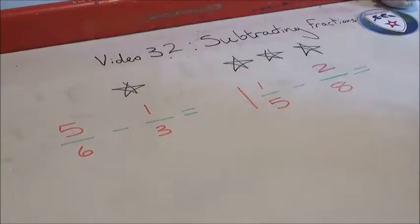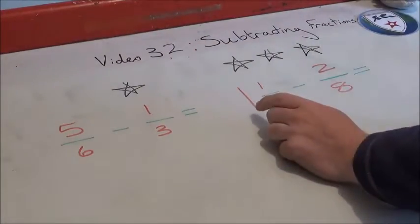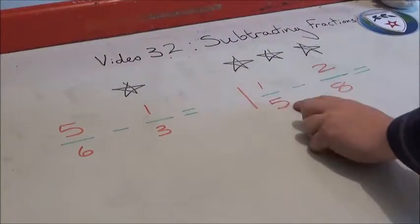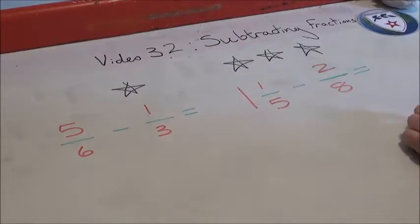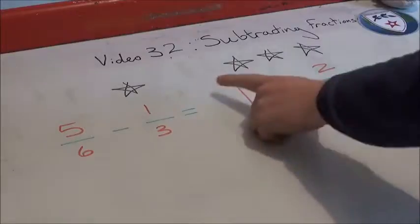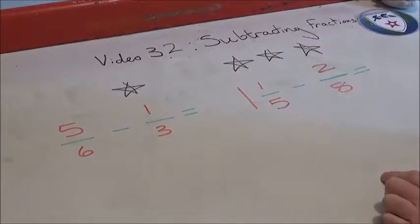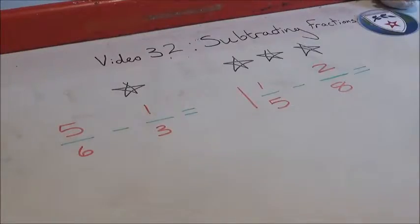You know what, I'm going to put another star on the board. I think this is a three-star question. So we have one and one-fifth take away two-eighths. Just to give you a bit of a clue, I would suggest that you turn this into an improper fraction first, and then you'll be able to work it out from there. Pause the video now, have a go, and we'll go through them in a bit.